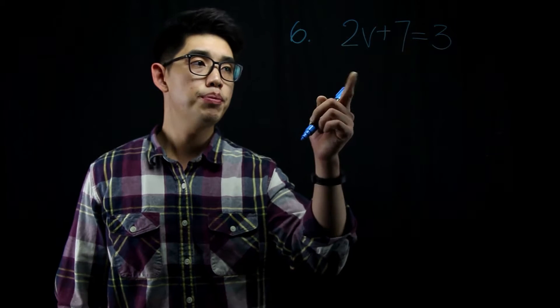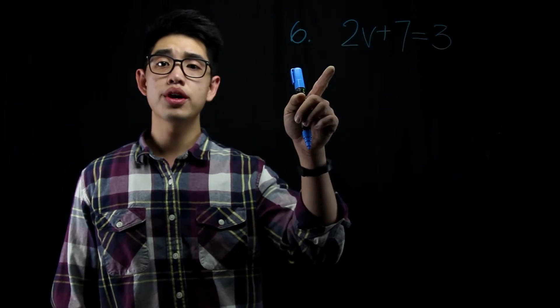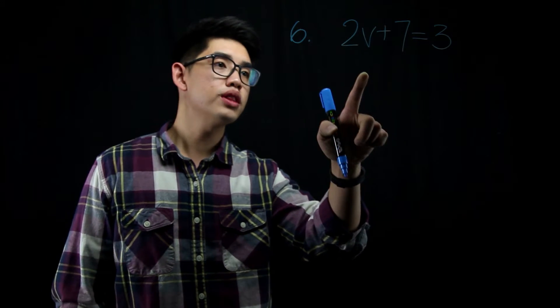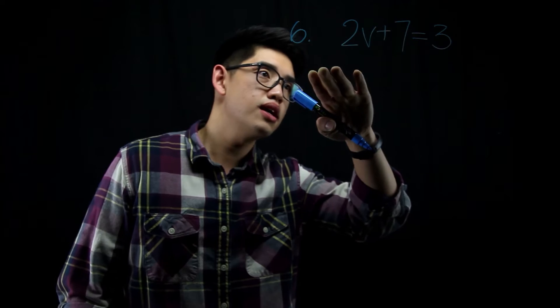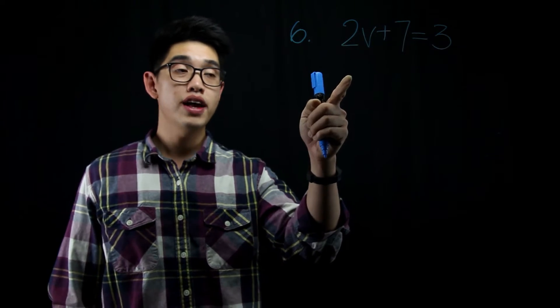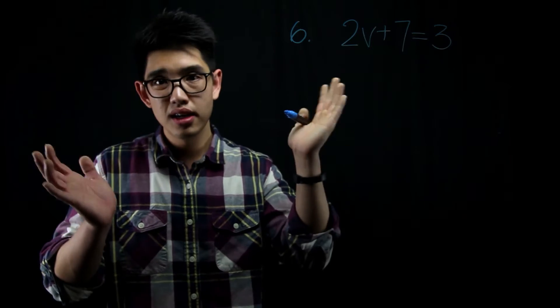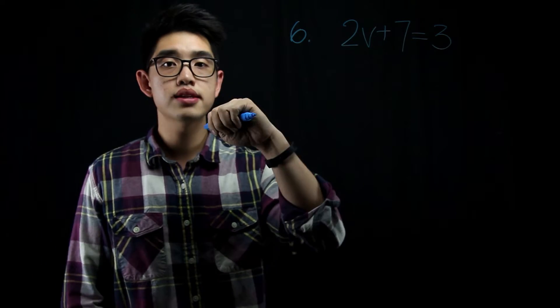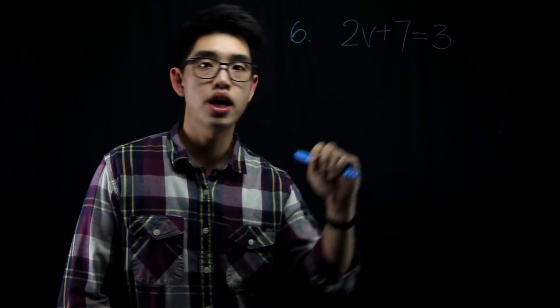For number 6, I have 2v plus 7 equals 3, and I want to try to figure out what is v. What number can go into v will make this entire equation true? I want to get v by itself, and just like when we're balancing a seesaw, whatever we do to one side, we have to do to the other side.